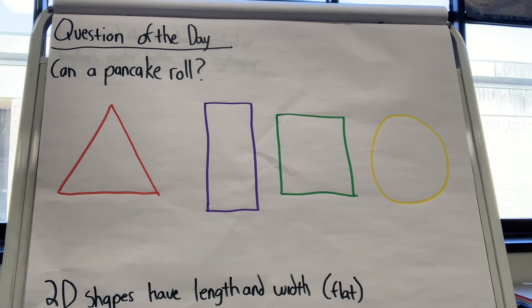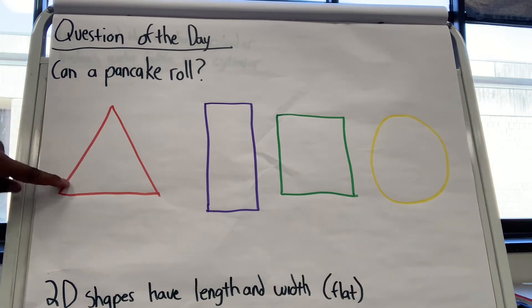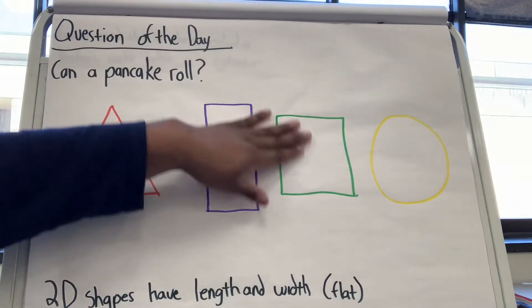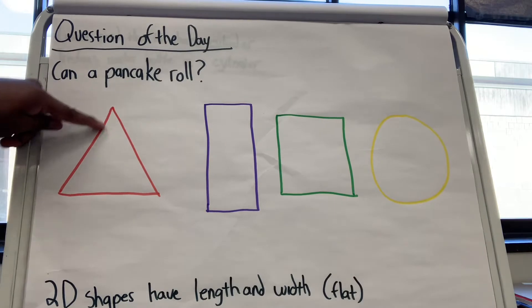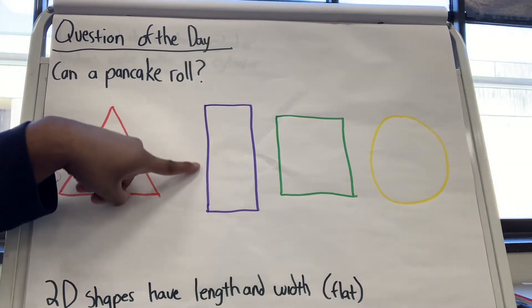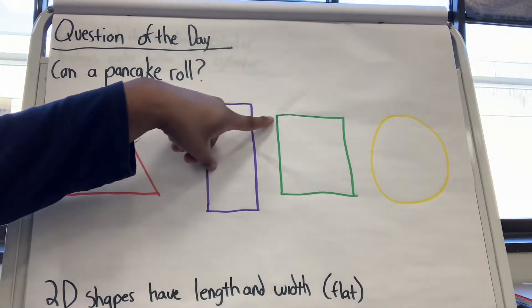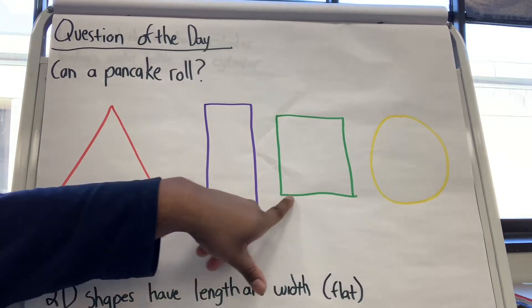2D shapes only have length and width. These shapes are flat. They're 2D shapes. Length and width—how long it is and how wide it is.